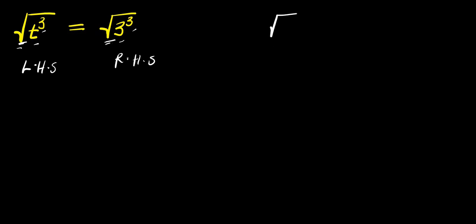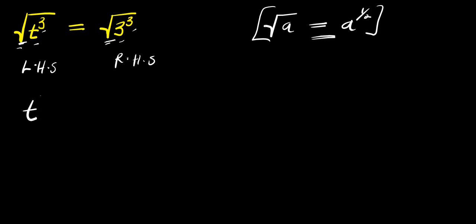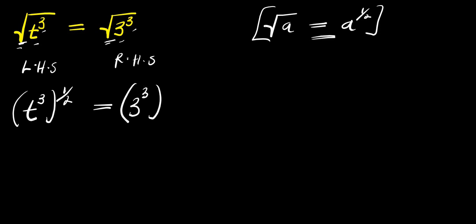If you have something like square root of a, this is just like writing a to the power of 1 over 2. So going by this identity, square root of t power 3 is the same thing as t power 3 raised to the power of 1 over 2. And this equals 3 to the power of 3 raised to the power of 1 over 2.